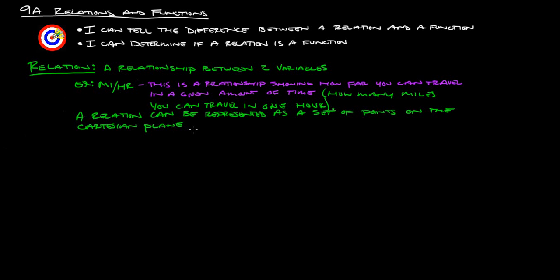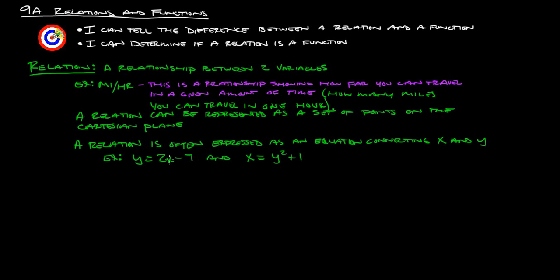A relation can be represented as a set of points on the Cartesian plane — that's simply the X and Y plane. A relation is often expressed as an equation connecting X and Y. For example, Y equals 2X minus 7 is a relation, and X equals Y squared plus 1 can also be considered a relation.